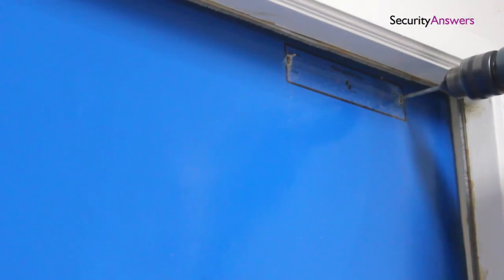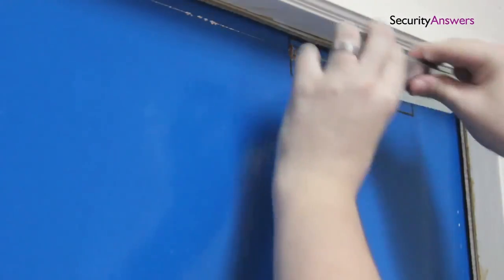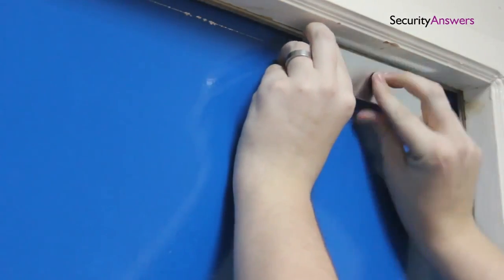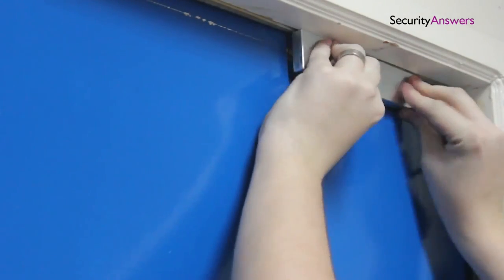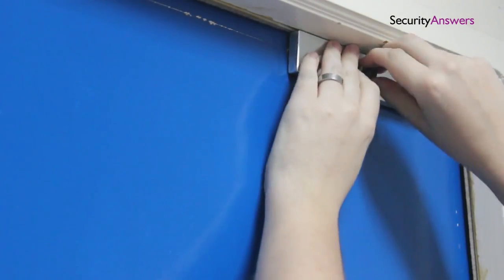Now that we have our screw holes marked correctly, we can begin to drill our holes. Once you have marked off the area, you can begin to mount the plate to the door using the appropriate screws or fitments.